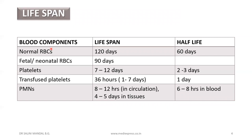Coming to the lifespan of blood cells: normal RBCs — 120 days; fetal or neonatal RBCs — 90 days; platelets — 7 to 12 days; transfused platelets — 36 hours to 1–7 days; polymorphonuclear neutrophils — 8 to 12 hours in circulation and 4 to 5 days in tissues. Half-lives: normal RBCs — 60 days; platelets — 2 to 3 days; transfused platelets — 1 day; polymorphonuclear neutrophils — 6 to 8 hours in blood. Lifespan is an important topic to remember.